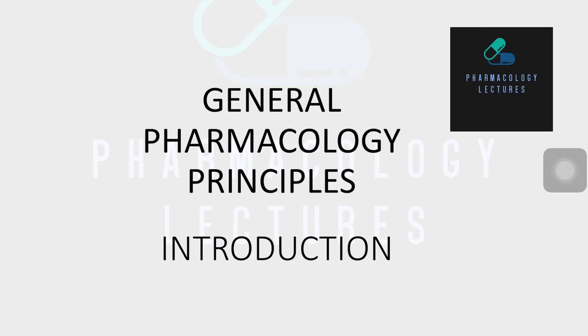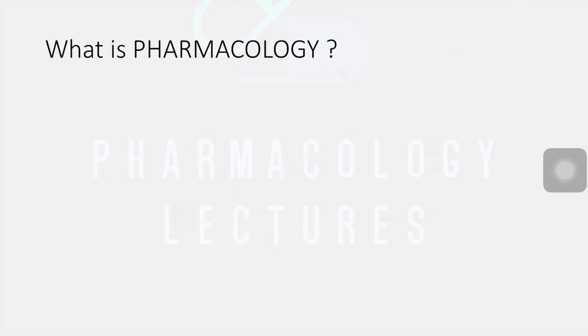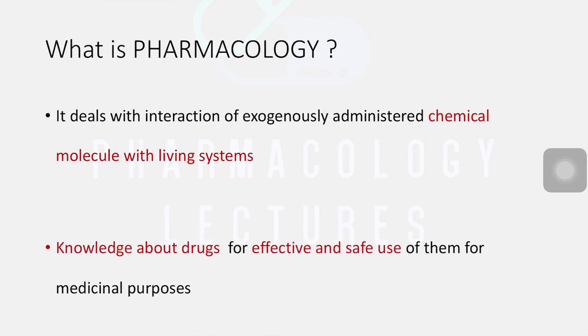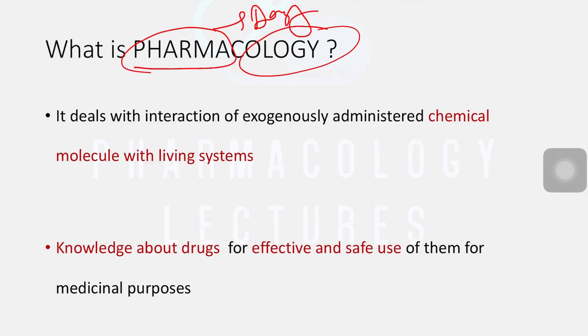This is our first lecture on general pharmacology principles related to introductions. First of all, let's see what pharmacology is. The word itself is divided into two parts: 'pharma' and 'logy.' Pharma is related to drugs. Now, when we say drugs, one thing that comes to mind is the layman terminology from movies - drugs as substances of misuse - but here in pharmacology, we will take drugs as medicines.